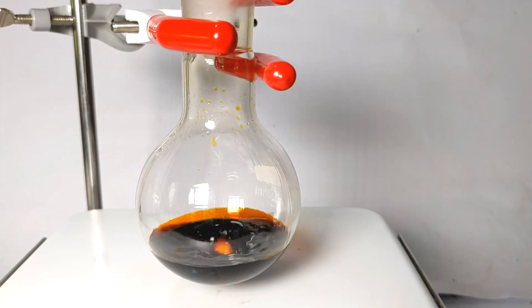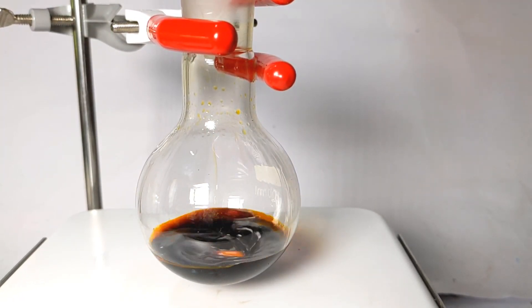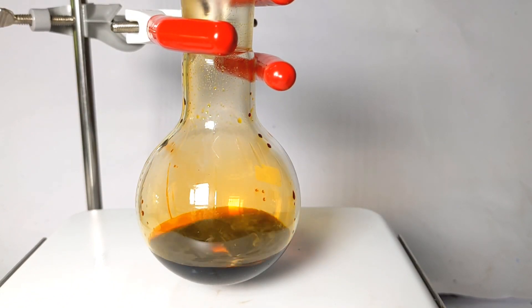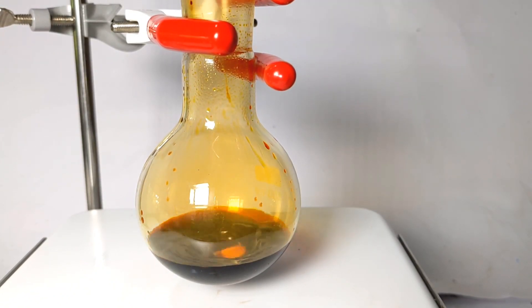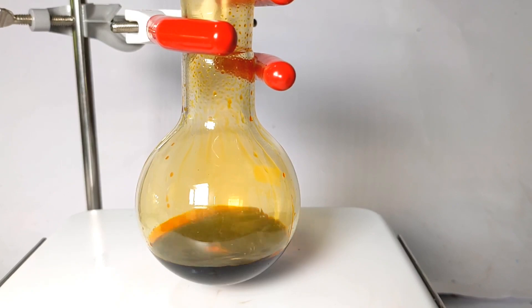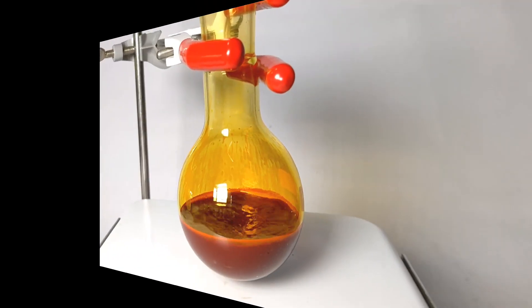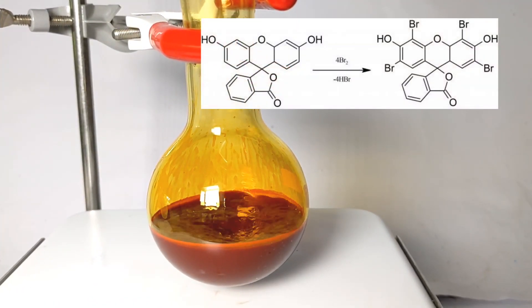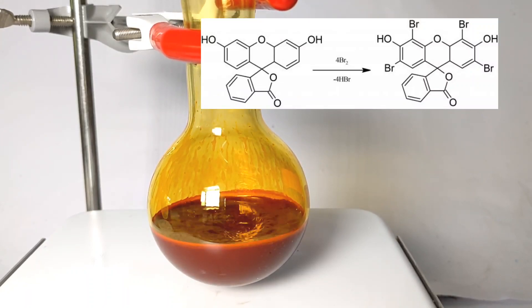Keep adding the bromine, and when all the bromine is added, a precipitate appears. This is the product, tetrabromofluorescein or eosin Y. It comes out of the solution as this compound is insoluble in alcohol medium. That brings us to the end of the reaction.